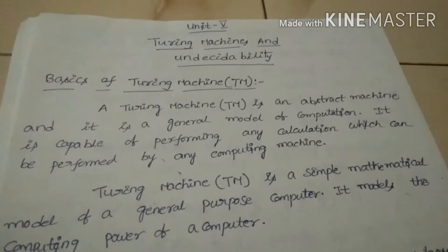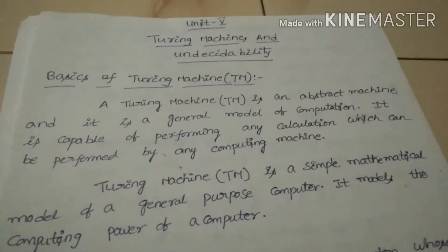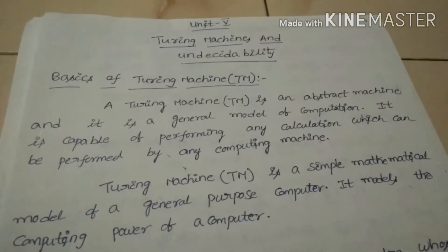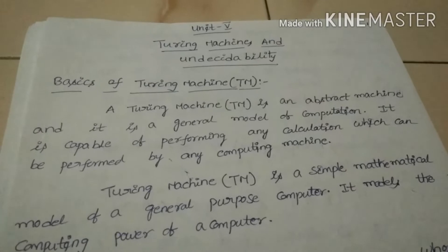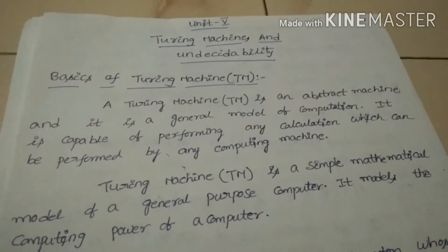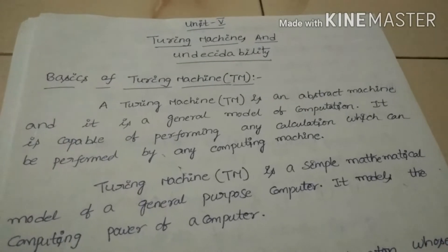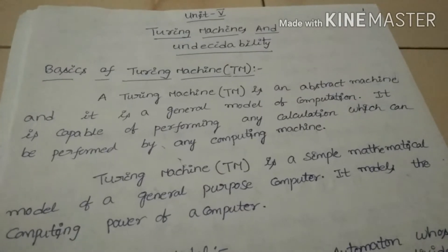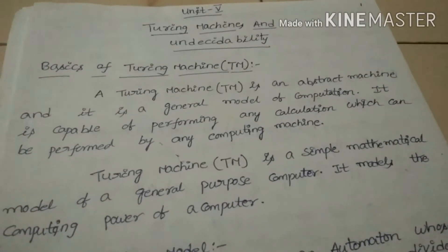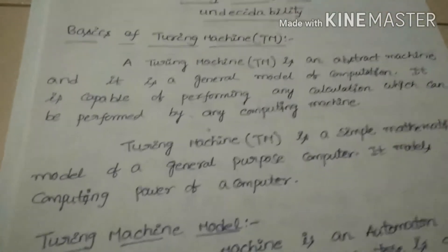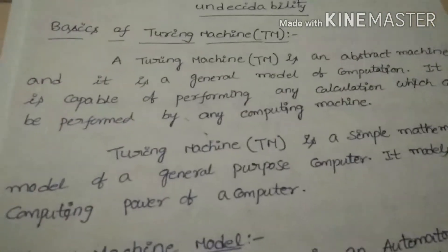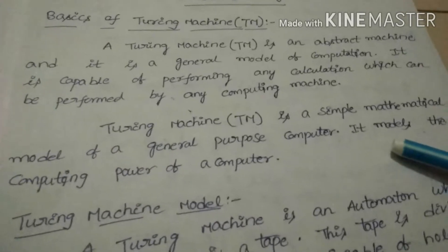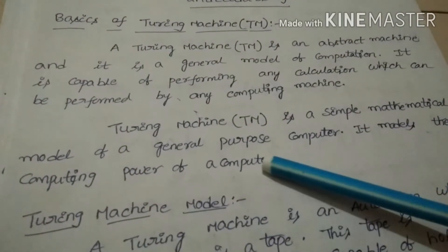The Turing machine can be used for calculating different types of functions such as simple functions and recursive functions. It can also be used in the field of artificial intelligence. It can help in analyzing different types of problems in terms of their space and time complexity. It is an abstract model of a digital computer and a simple mathematical model of a general purpose computer that models the computing power of a computer.